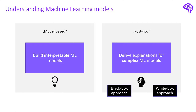For white box approaches however we have access to the model internals. That means for instance we can access gradients or weights of a neural network. The field Explainable AI also entails the whole psychology area about what makes good explanations and which explanation types are the best for humans, but we don't really talk about this in the next videos — rather the different algorithms that exist.